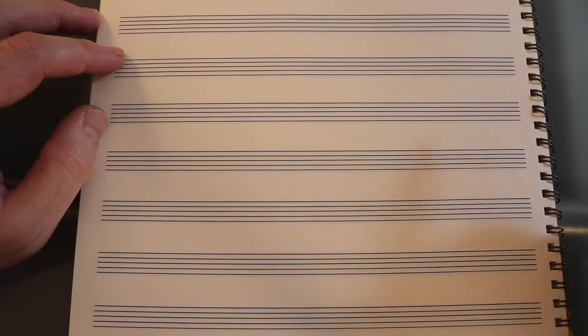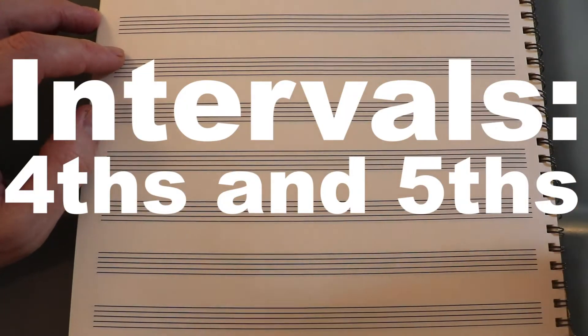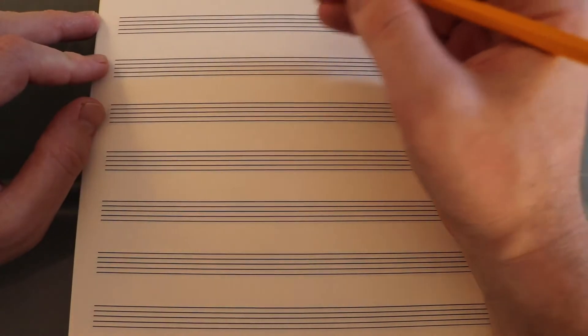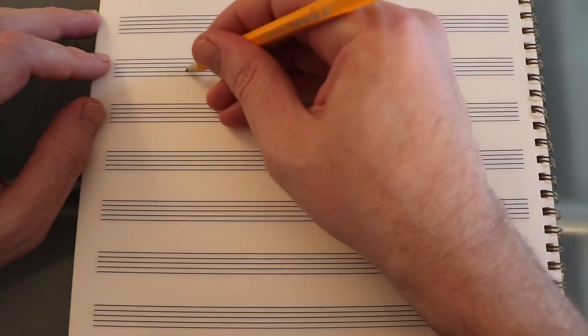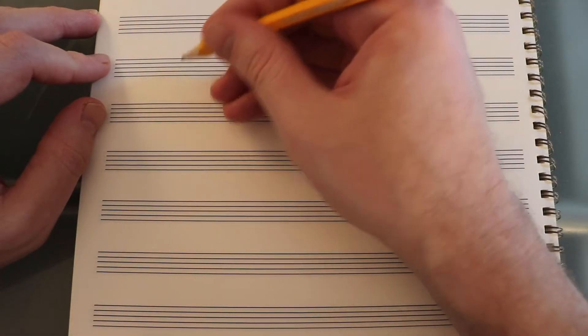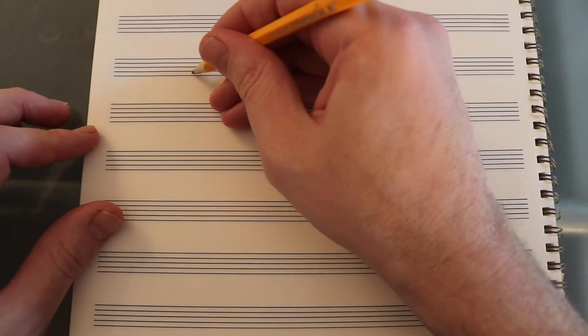In this video we'll continue on with intervals and we'll discuss fourths and fifths. The numeric part for fourths and fifths is pretty simple because all we have to do is count lines and spaces. It doesn't matter what the clef is as long as we're on the staff.